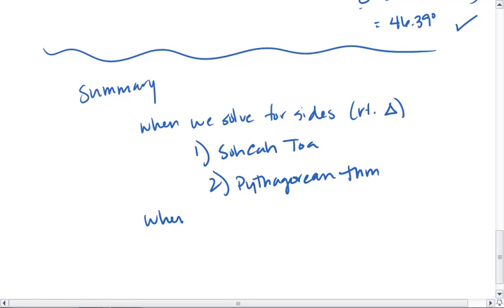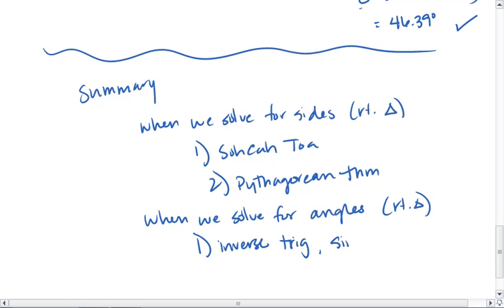When we solve for angles in a right triangle, we use inverse trig. That's sine inverse, cosine inverse, and tan inverse.